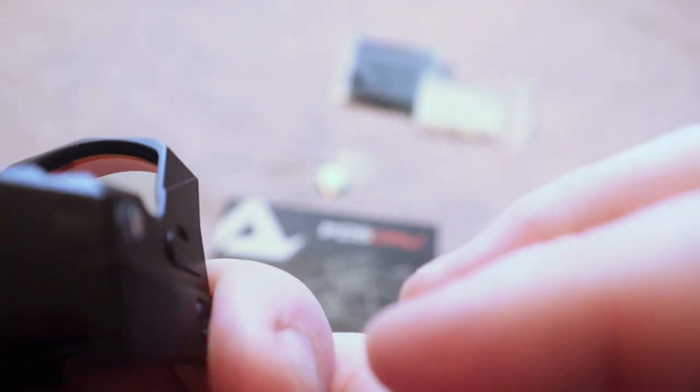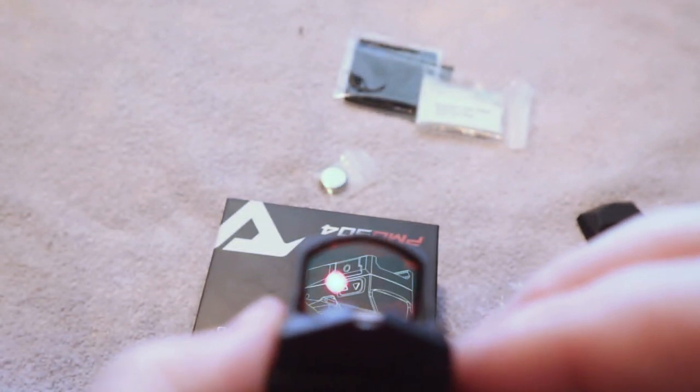There we go. We can see there that is, it's not coming through very well on camera. But what that is, basically, that is the circle. That is the circle reticle. Let's see if I can get it to focus.